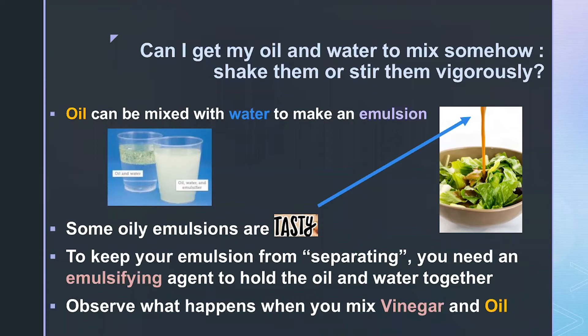Now that we have seen how oil floats and molasses sinks, let's explore some other concepts and ask ourselves the question, can I get my oil and water to mix somehow? Is it possible to shake them or stir them vigorously and can I mix them that way? Well, the answer is that oil can indeed be mixed with water and it makes something that's called an emulsion. You may be familiar with some emulsions and some of them are actually quite tasty. Salad dressing is a perfect example of a tasty emulsion. Now the thing about emulsions is that they could easily separate back to oil and water. And so to keep them from separating, you need an emulsifying agent that holds the oil and water together. In salad dressing, vinegar is a good emulsifying agent. And we will see that in the next activity.